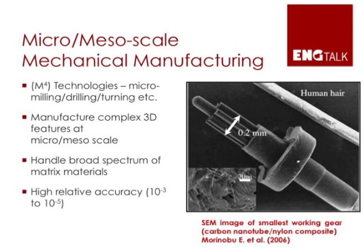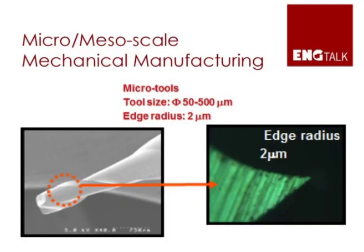That means our tooling now might be much smaller than the diameter of your hair. Our spindle speeds are going to be much higher than what is used at the macro scale, and so forth. These processes are gaining a lot of significance for the industry here in the United States because they are used for making high-value products. The image on the screen shows one typical tooling, and this one particularly is of a larger size.